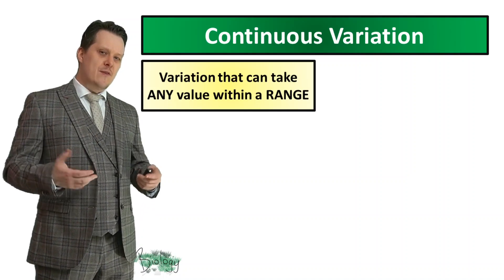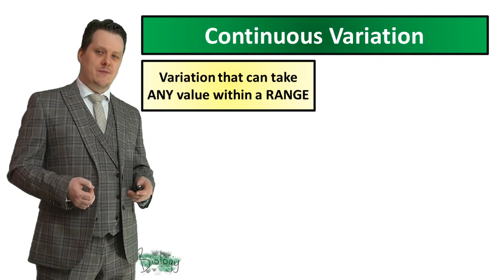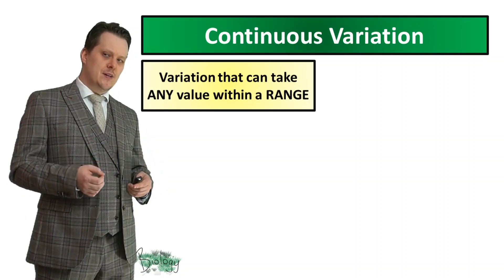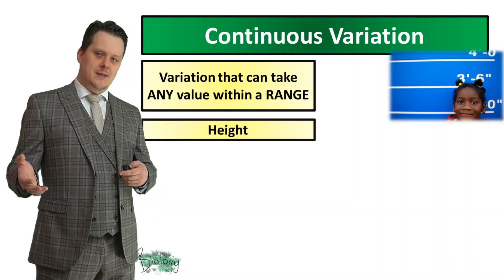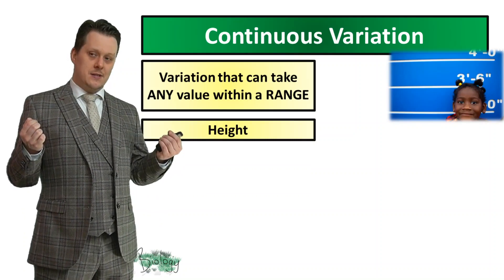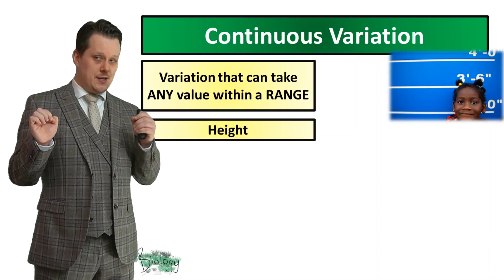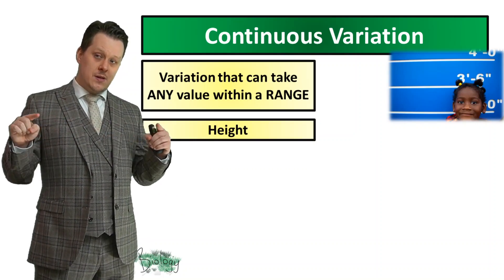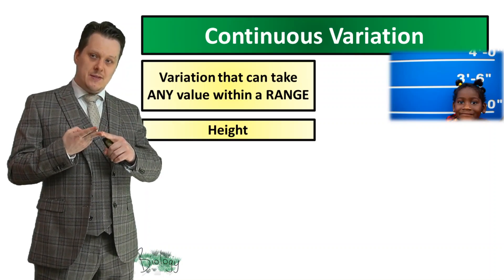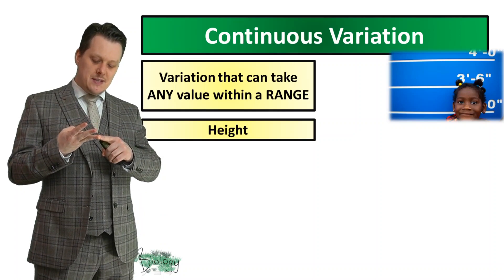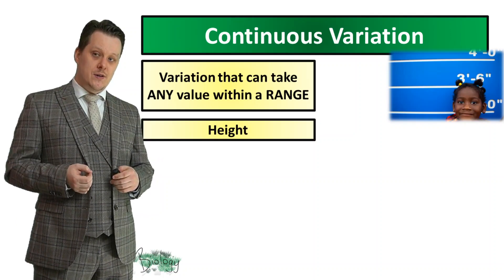So what sort of variation within a species would be considered continuous variation? Continuous variation is any variation that takes any value within a range. This includes things like height, because you can take the smallest person and the tallest person and everyone else would be between them — they could have any value within that range, and you could measure it in centimetres, millimetres, or even smaller increments if you had accurate enough equipment.